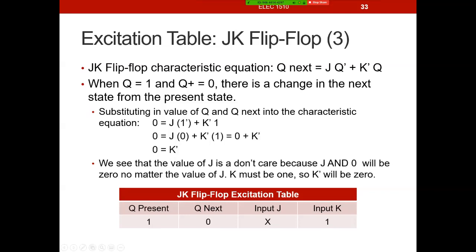The next combination is Q in the present state is one, Q_next is zero. Substituting: one-not is zero, so J·0 = 0; K'·1 = K'. We have the expression zero = K', so K must equal one because the inverse of one is zero. The input J, we don't care what it is because it dropped out of the equation.